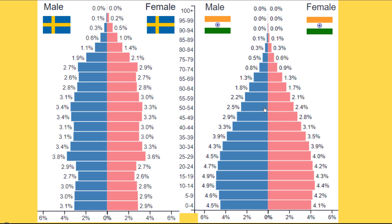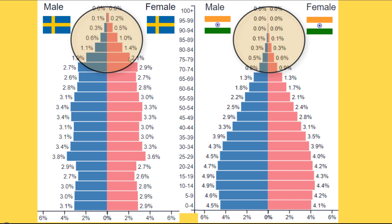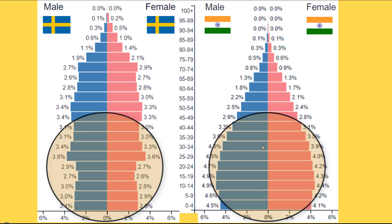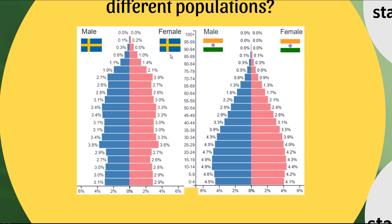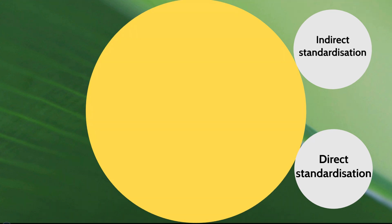We might be tempted to compare these crude rates, but there's a big problem. Looking at the population pyramids for Sweden and India, you can see that Sweden has a much larger percentage of its population above age 75, while India's population is heavily weighted towards younger age groups. This means Sweden has an artificial disadvantage because most mortality comes from older age groups, and Sweden simply has a higher proportion of older people to begin with.